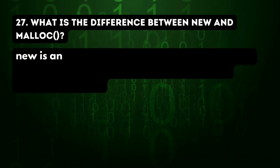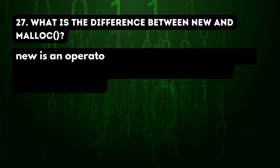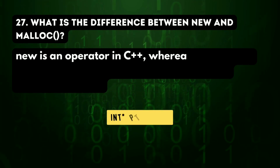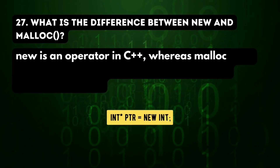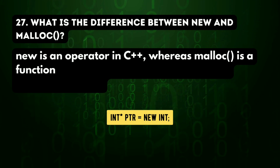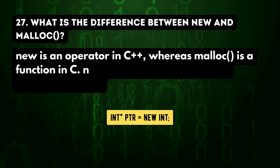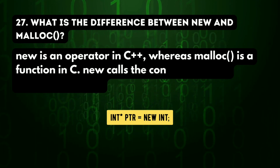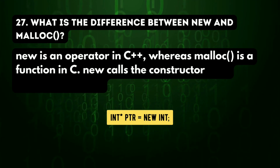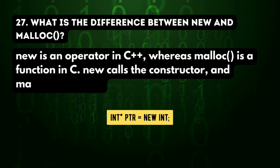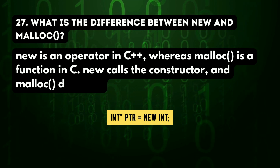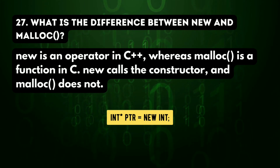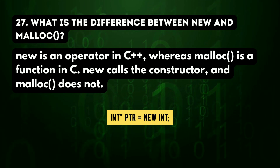27th question: what is the difference between new and malloc? New is an operator in C++, whereas malloc is a function in C. New calls the constructor and malloc does not.